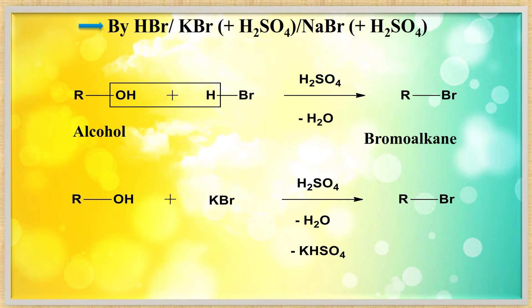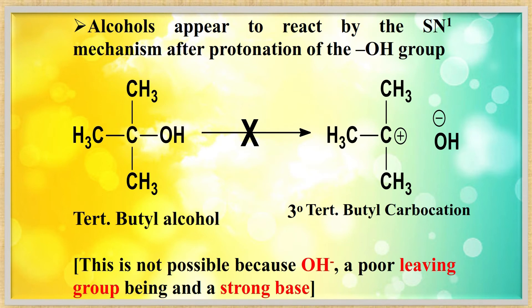Using HBr: you can also use KBr/H2SO4 or NaBr/H2SO4. The OH group is removed and bromine is introduced: R-OH + HBr → R-Br + H2O. If using KBr, the byproduct is KHSO4 and water.